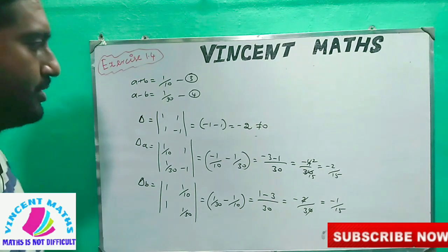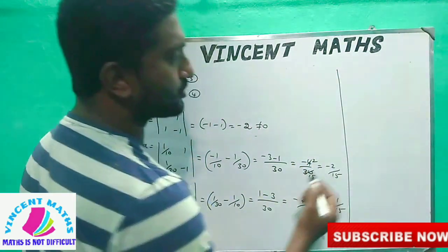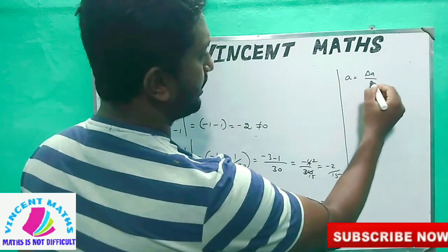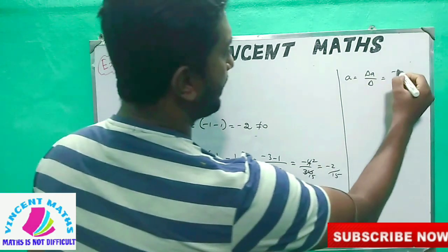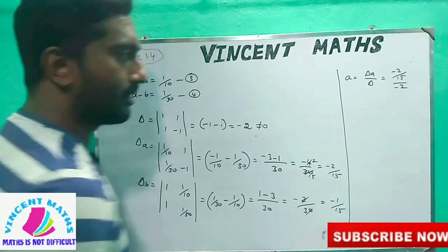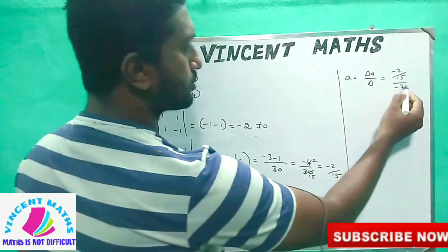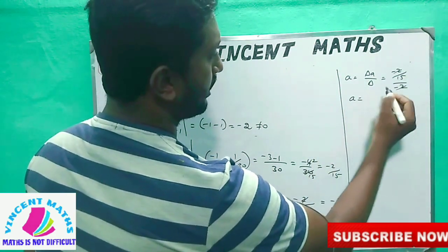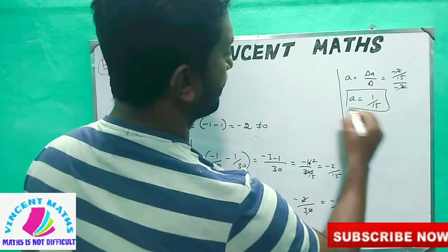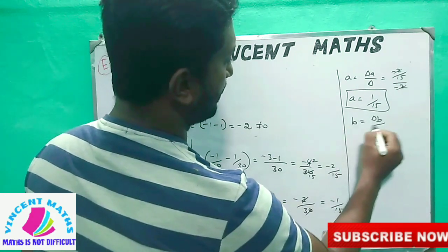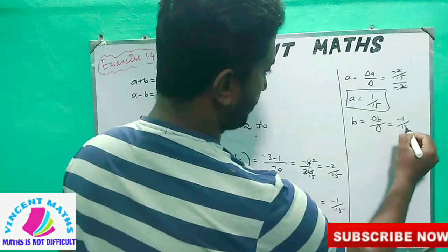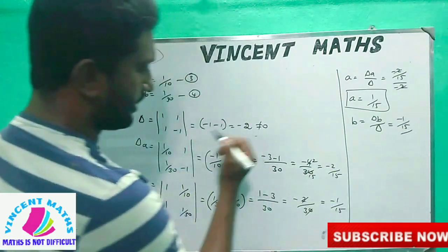Now we look at the formula — Cramer's rule. The A value is del A divided by del. Del A value is minus 2 by 15, and del value is minus 2. This minus 2 will cancel, giving A equals 1 by 15. That is the A value.